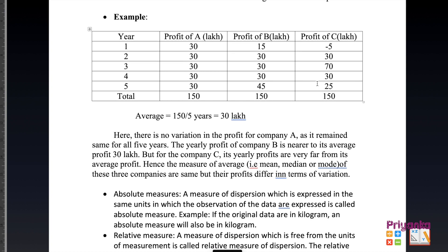Consider this example: we have 5 years of profit data for companies A, B, and C. Looking at company A, the total profit is 150 divided by 5, giving an average of 30 lakh. For company B, the yearly profits are 50, then 30, 30, 30, and 45 in the fifth year — there is not much variation or difference in the profit.